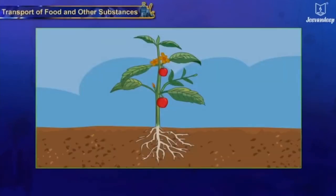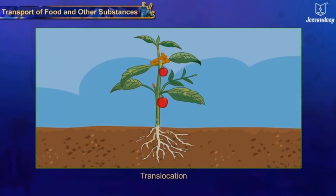The food manufactured by the leaf cells is transported to each and every cell of the plant for nutrition, and to the roots, fruits, and seeds for storage. This process is called translocation.